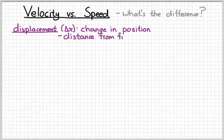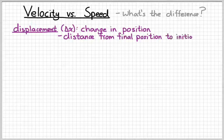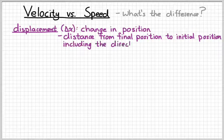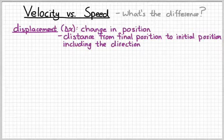We give that the symbol delta x. It's the distance from your final position to your initial or starting position, and it includes a direction — left, right, positive, negative, whatever.